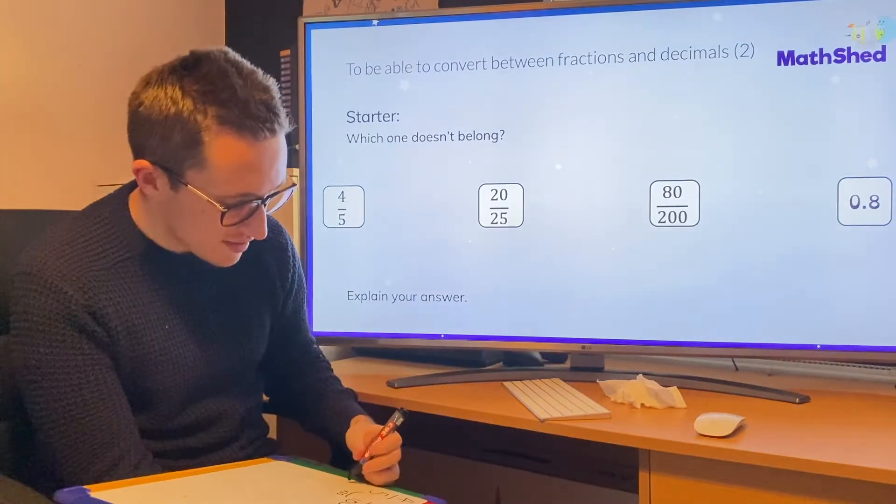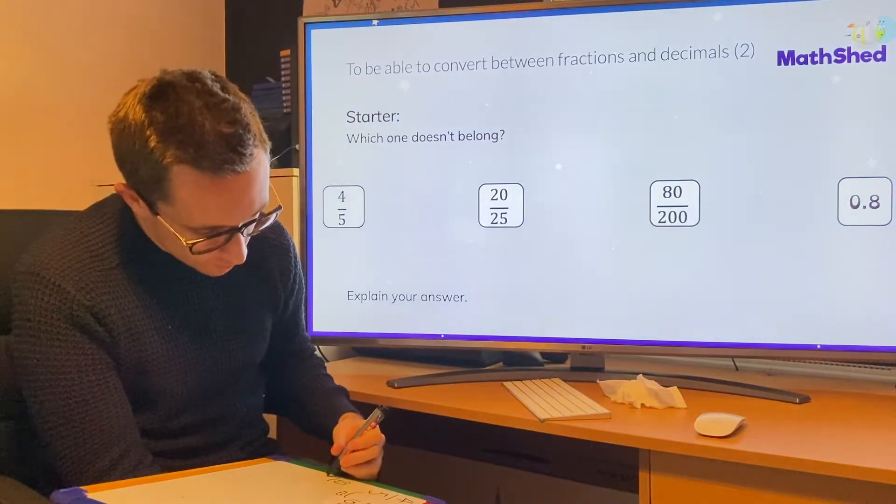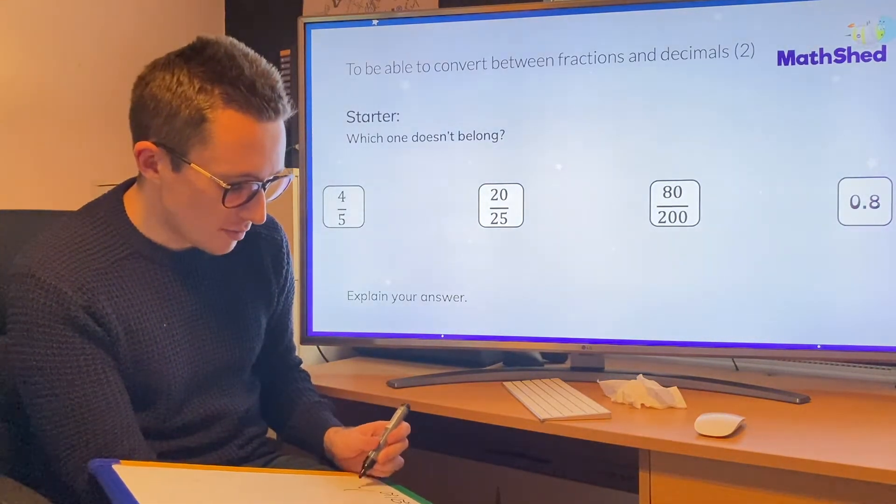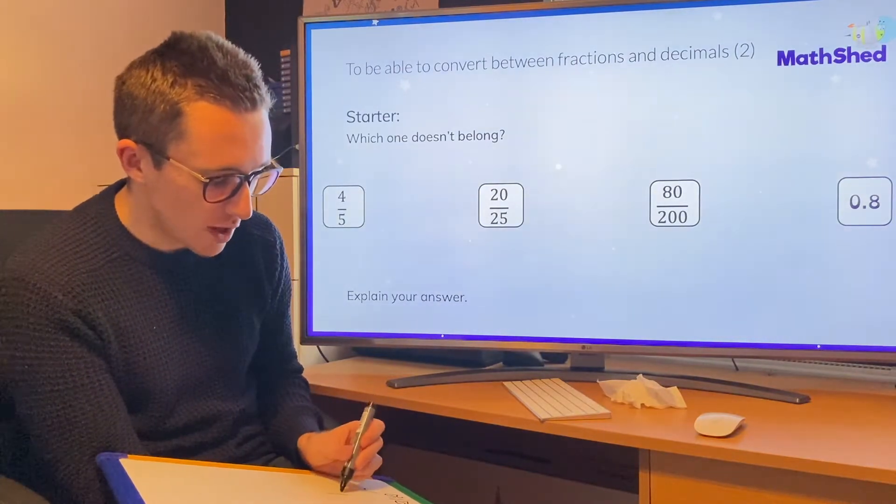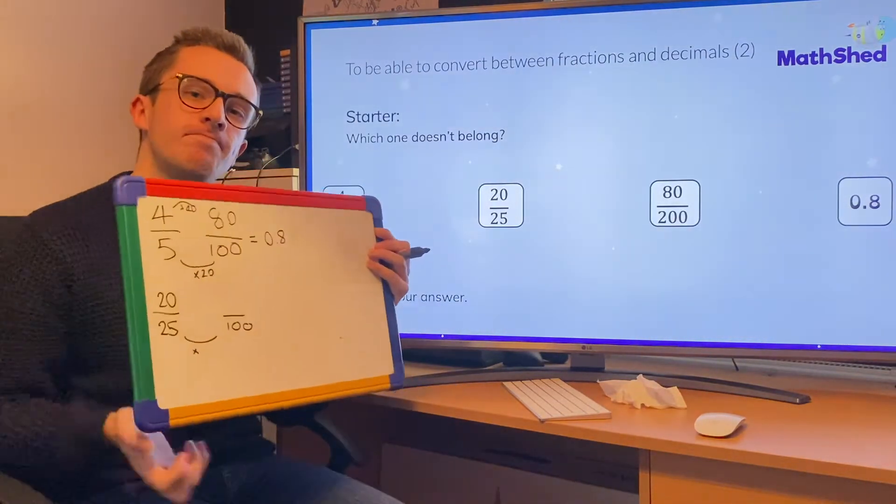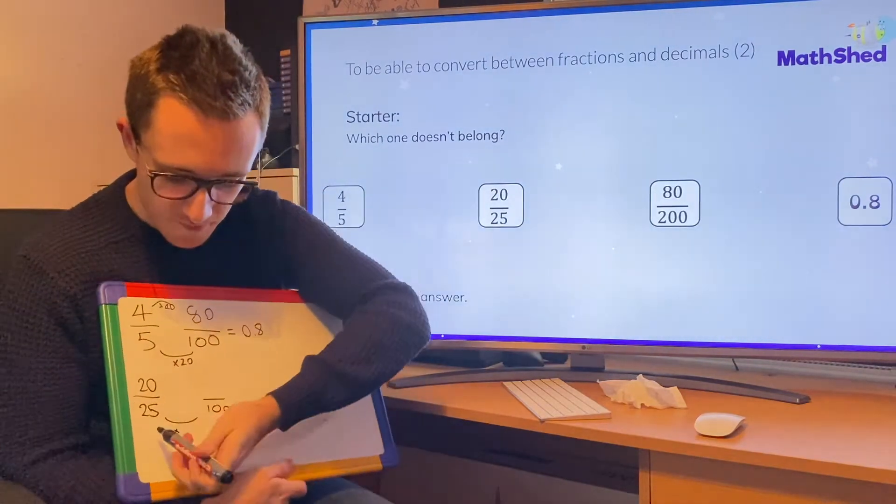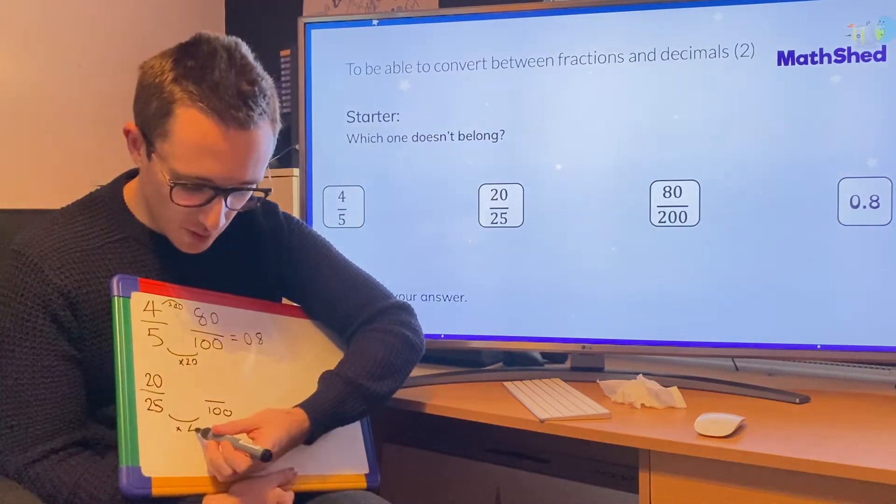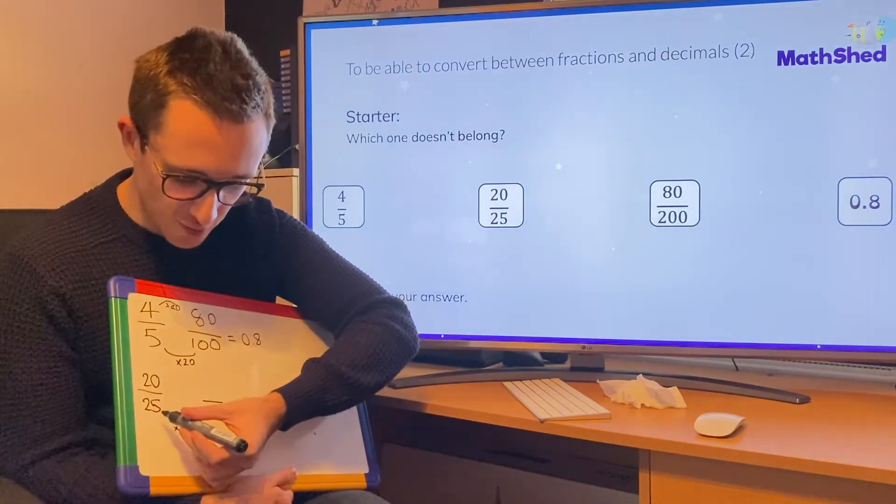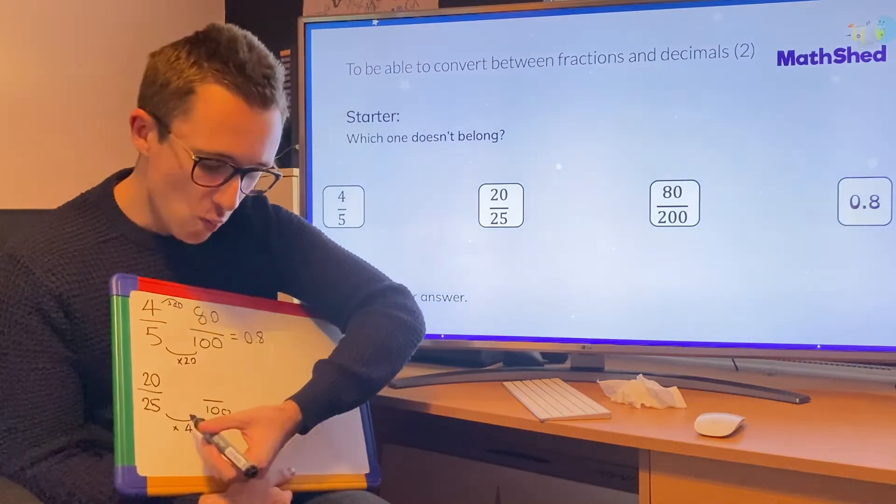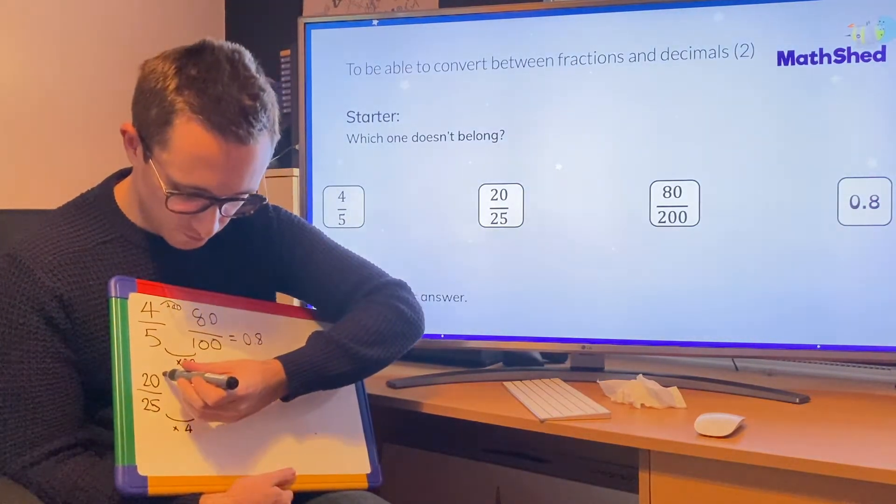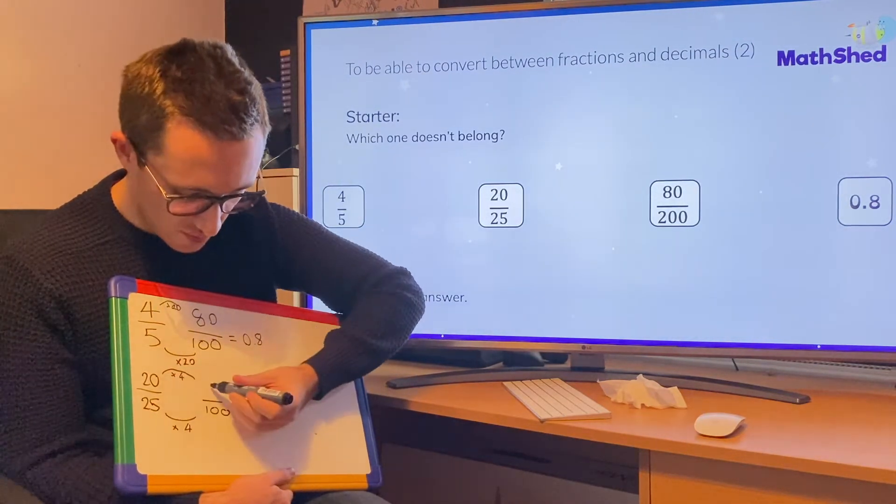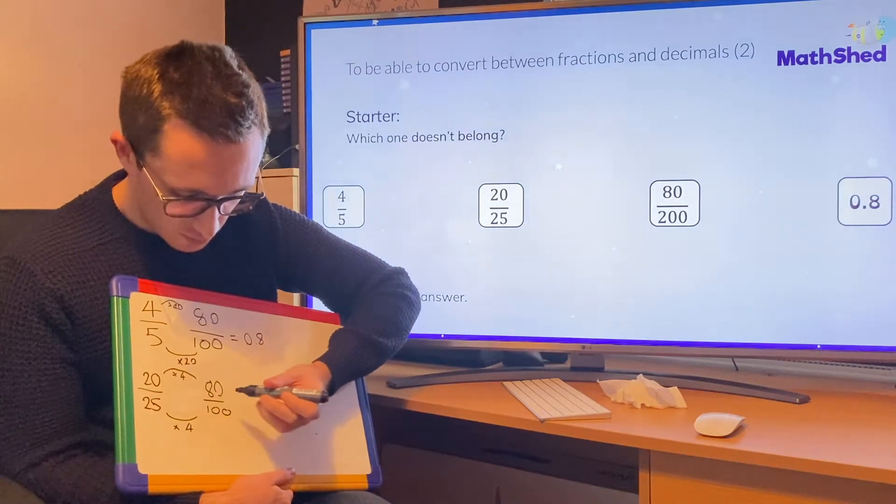So let's move on to the next one. I'm going to be looking at 20 over 25. I'm going to look to times that to turn it into 100 as the denominator. So I take my 25, I'm going to multiply it by 4. 25 times 4 is 100. What I do to the bottom, I need to do to the top.